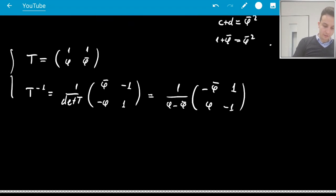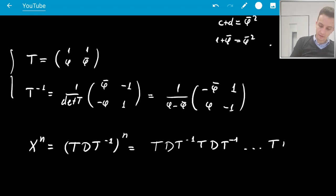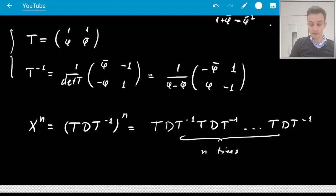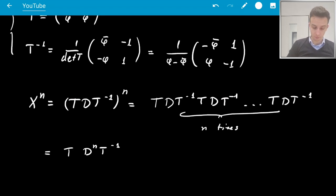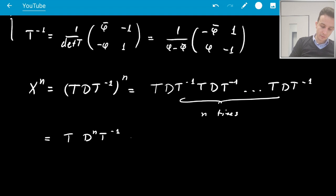And now we'll keep that for later. And now let's find, well, what's x to the n? Well, that's T D T inverse to the n. But that's simple enough because that's like T D T inverse, T D T inverse, T D T inverse, n times. And you can see that the T and T inverse always cancel. So you just get T D to the n T inverse. Of course, this is a general property. Okay. And that means that we'll get T times phi to the n, phi bar to the n, 0, 0, times T inverse.